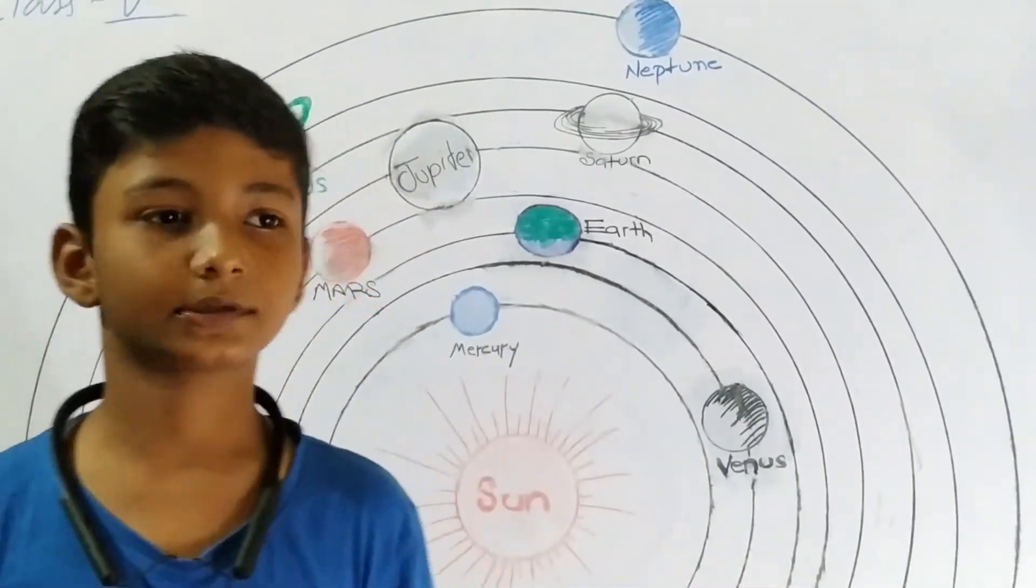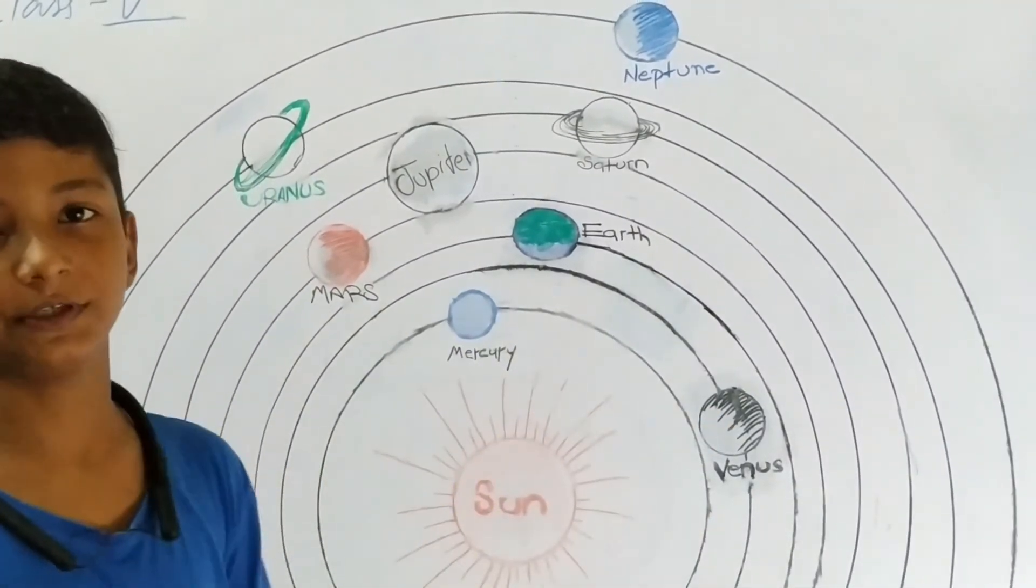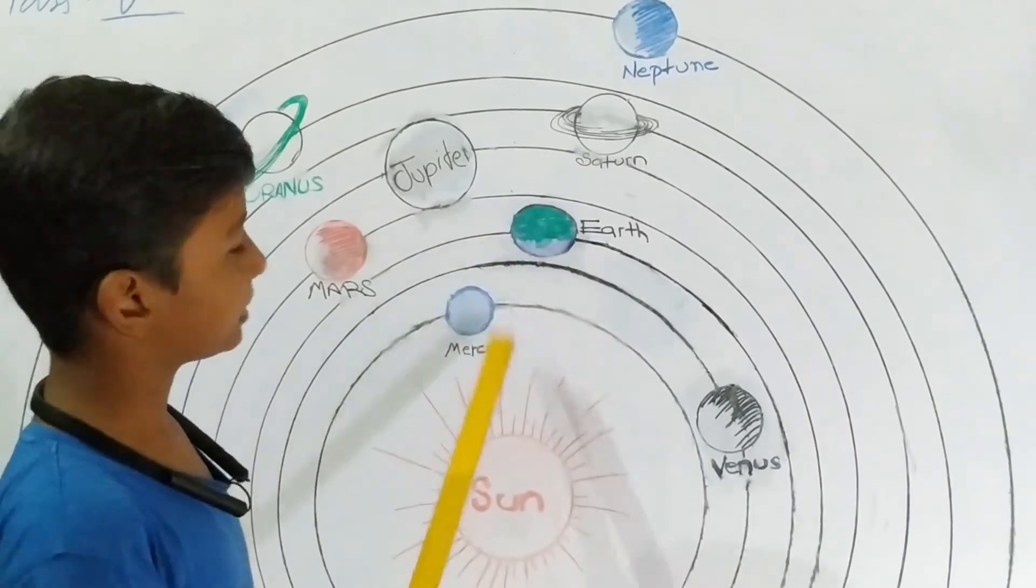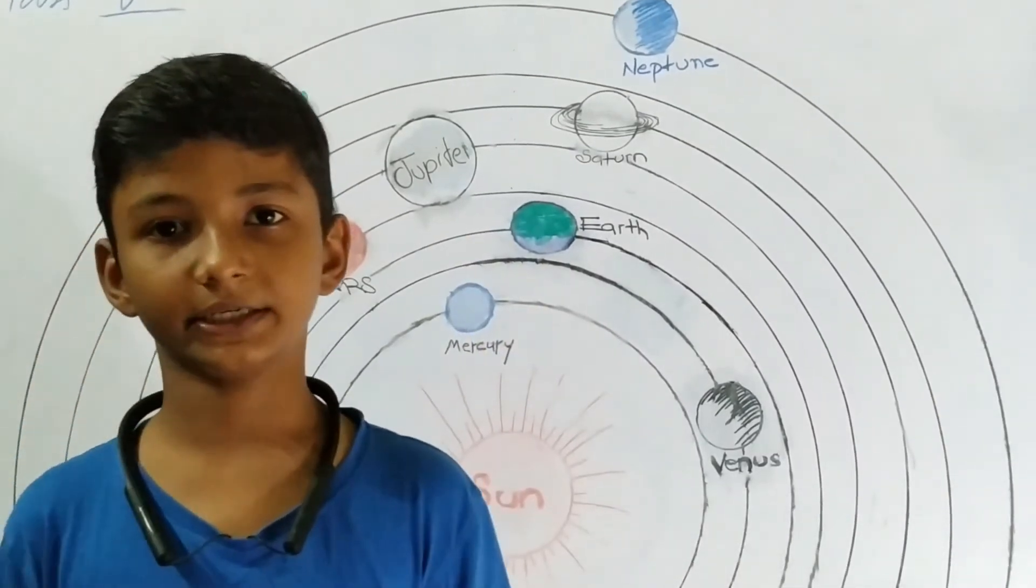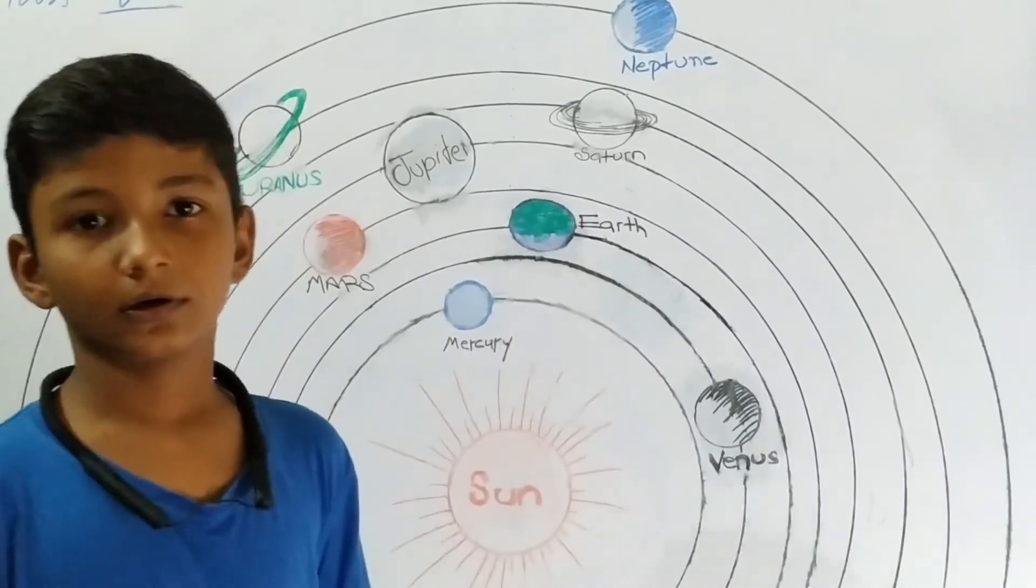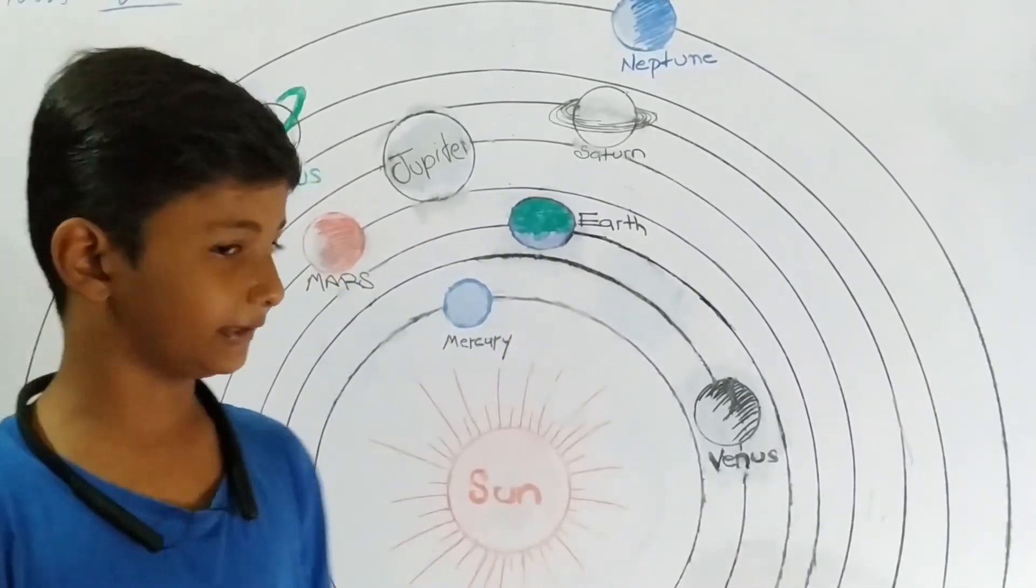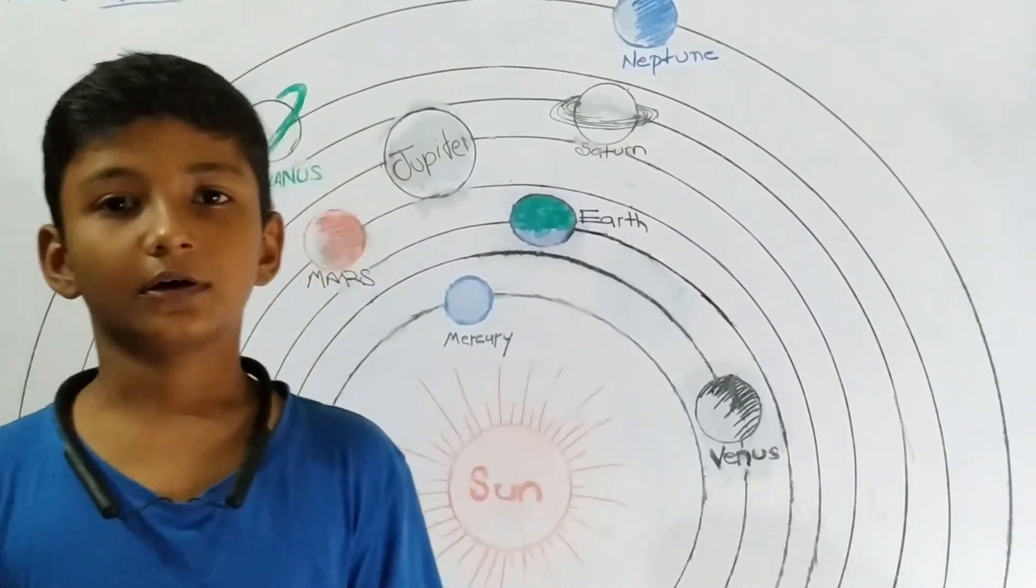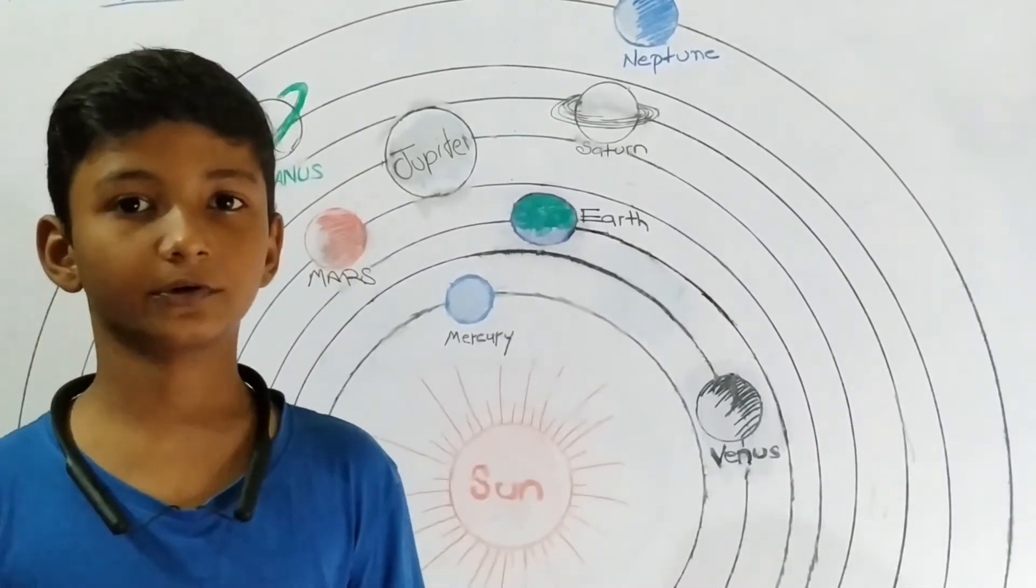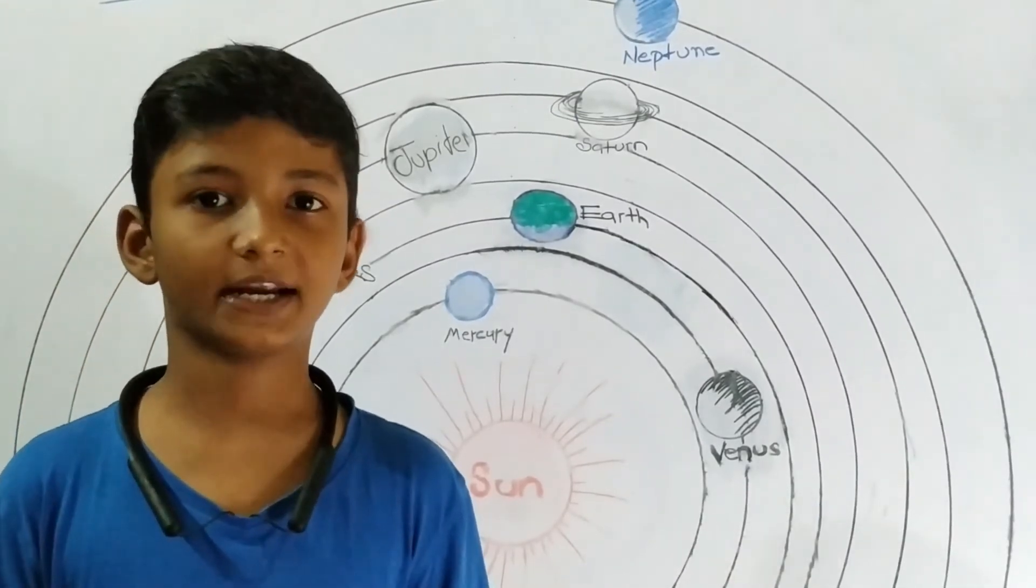Earth is the third planet in terms of increasing distance from the Sun. Earth looks like a blue and green spherical ball from space. Earth completes one revolution in 365 days. Due to this, Earth has four seasons: Winter, Summer, Spring, and Autumn.